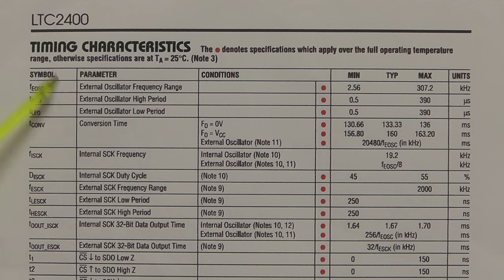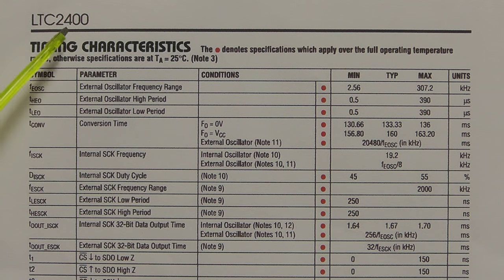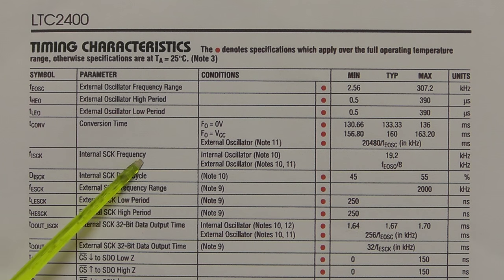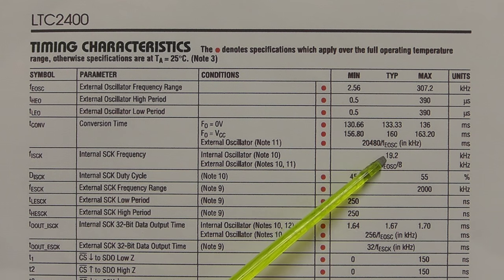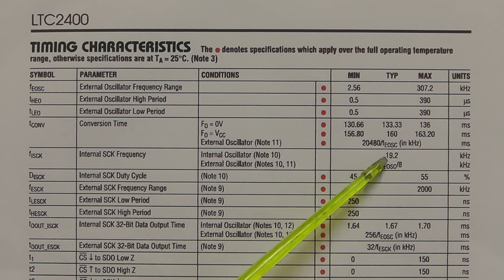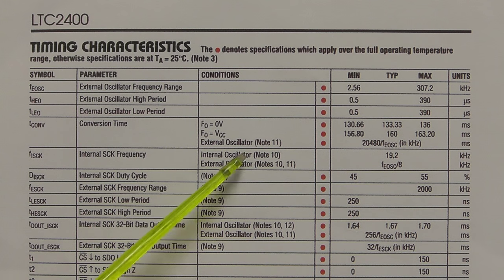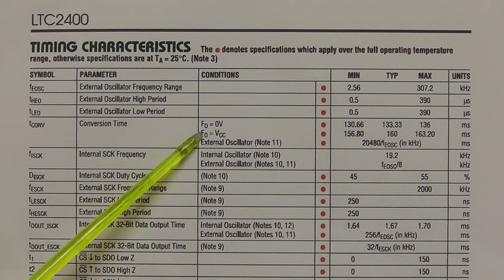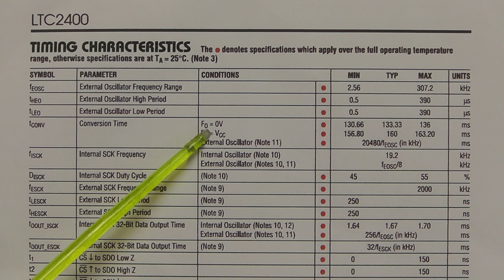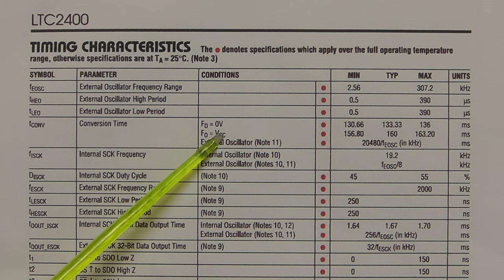On page four of the datasheet for the LTC2400 we have the timing characteristics for this IC. The first parameter is the internal clock frequency — it has a built-in clock to do the conversion, running at 19.2 kilohertz. We'll be using that, although there is an option to use an external clock. Now we had an FO pin on the IC, and depending on whether we take that to ground or to VCC plus five volts will determine whether we select the 60 Hz or 50 Hz notch filter.